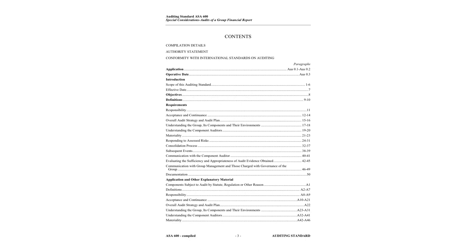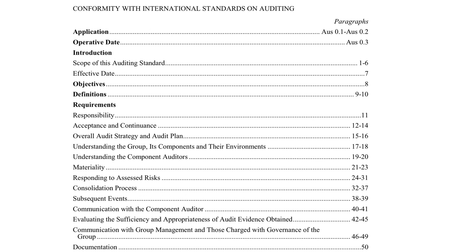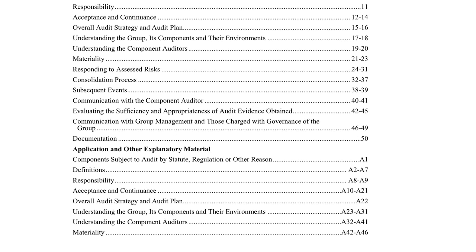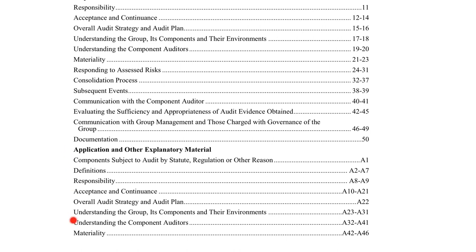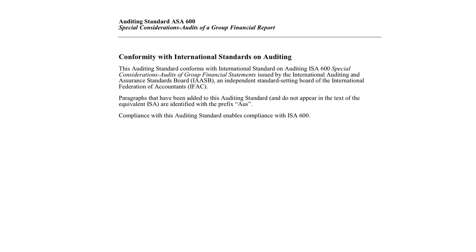Here's our table of contents and if you zoom in you'll notice there's quite a lot going on in this particular standard. There's quite a lot of requirements here because there's some very specific information to follow, and then there is probably more in the explanatory material. I don't go through the explanatory material but I'll give you the link to download the standard. Our Australian standards are internationally harmonized with ISA 600, so if you are studying the international versions this video should still be useful for you.